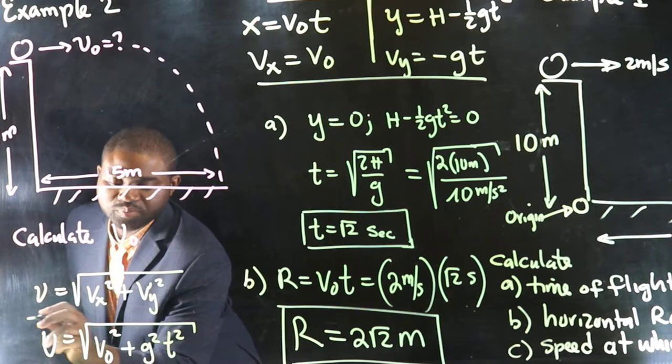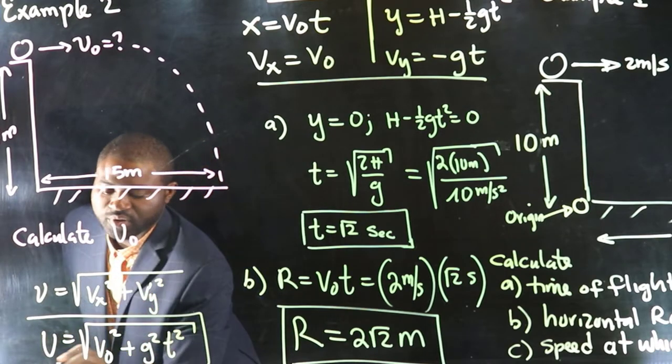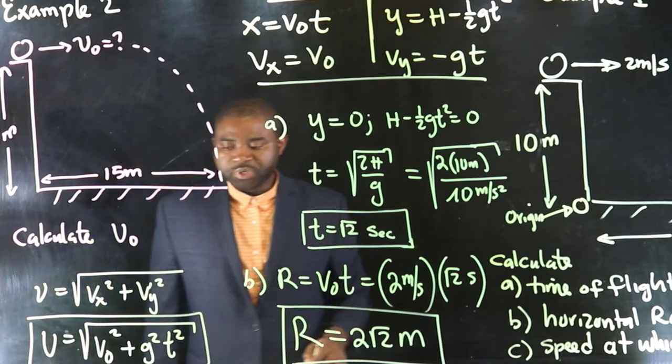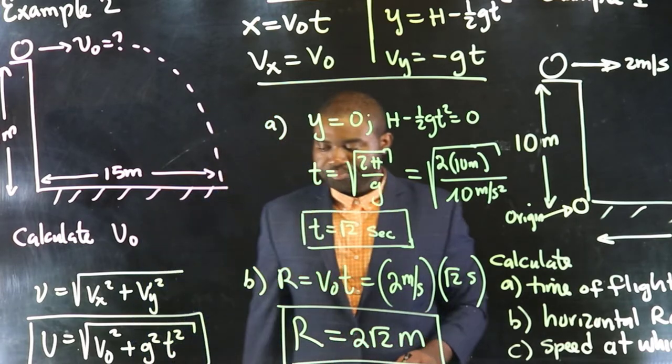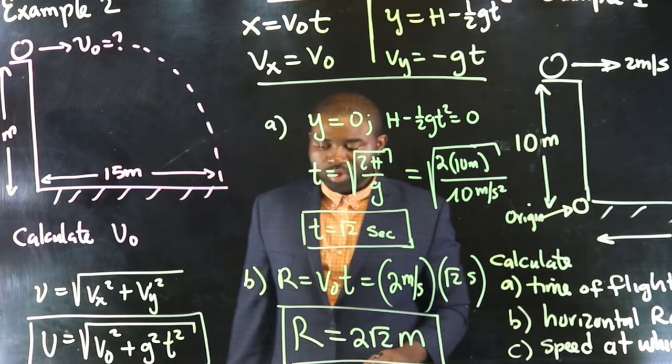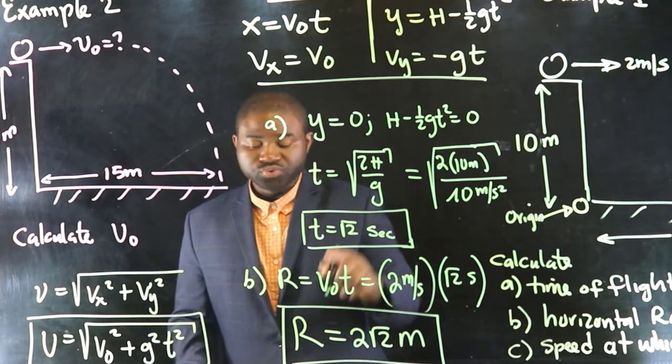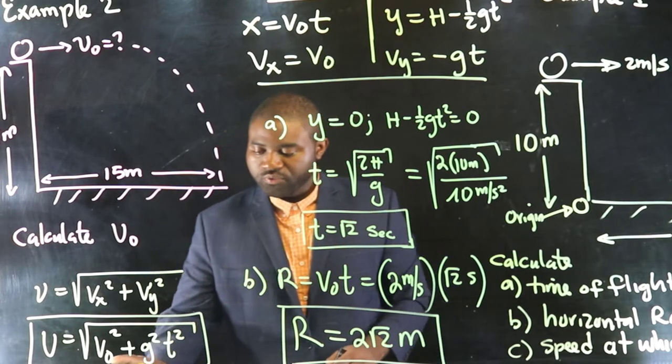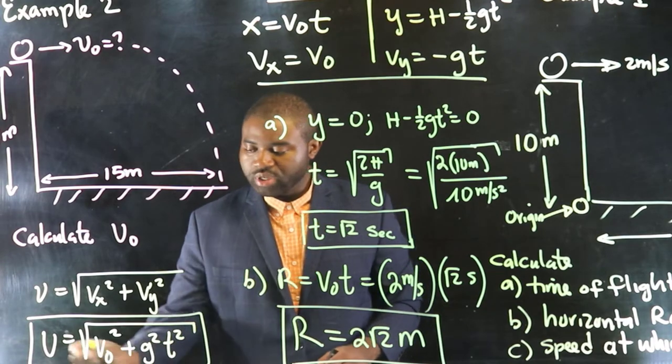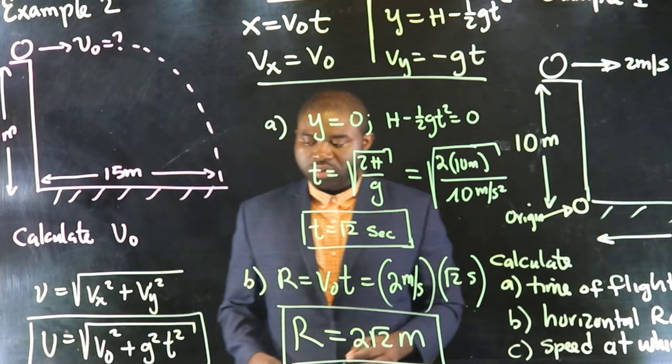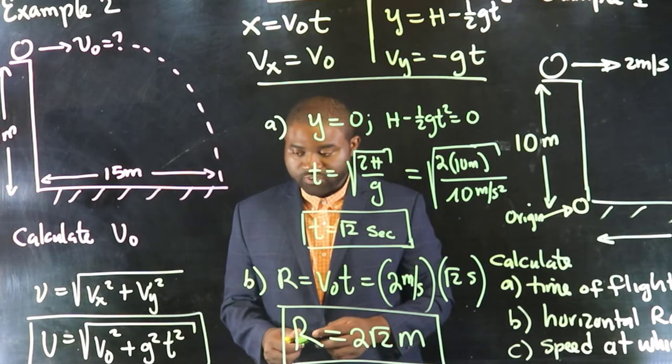So, this expression right here gives us the speed at any time t. But, when the ball hits the ground, t carries a specific value, which is root 2. We know v naught, we know g, so we can calculate the speed with which the ball hits the ground pretty easily.